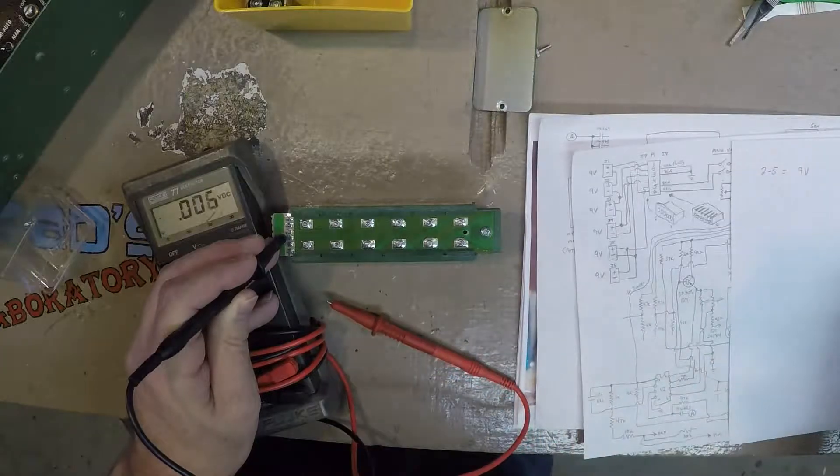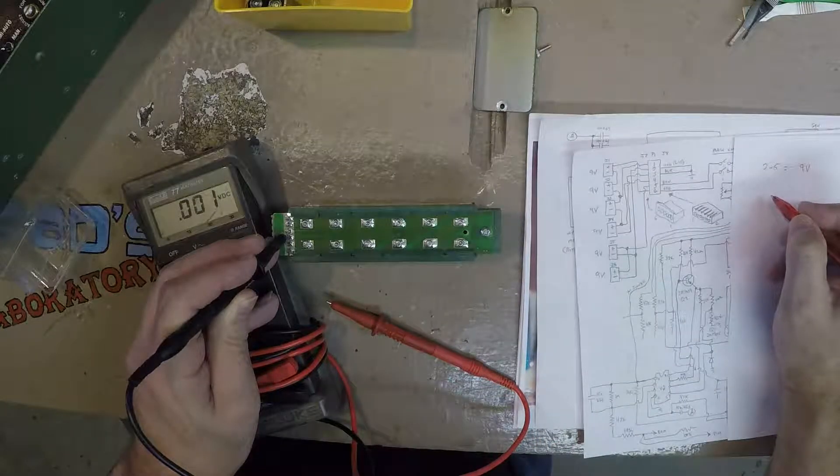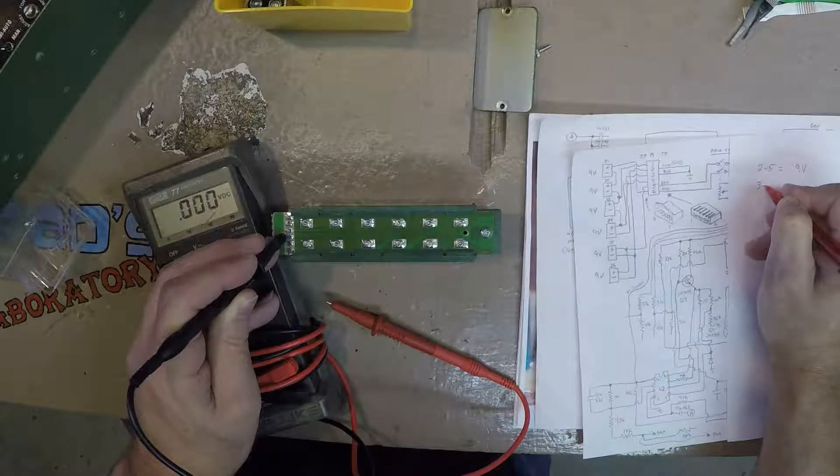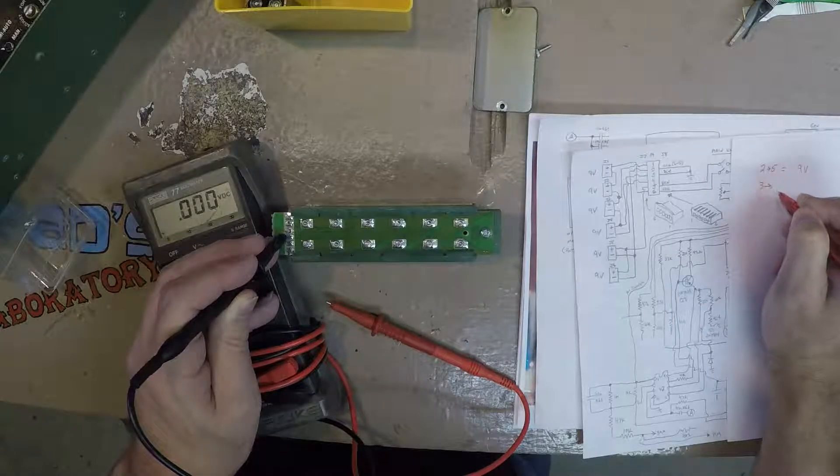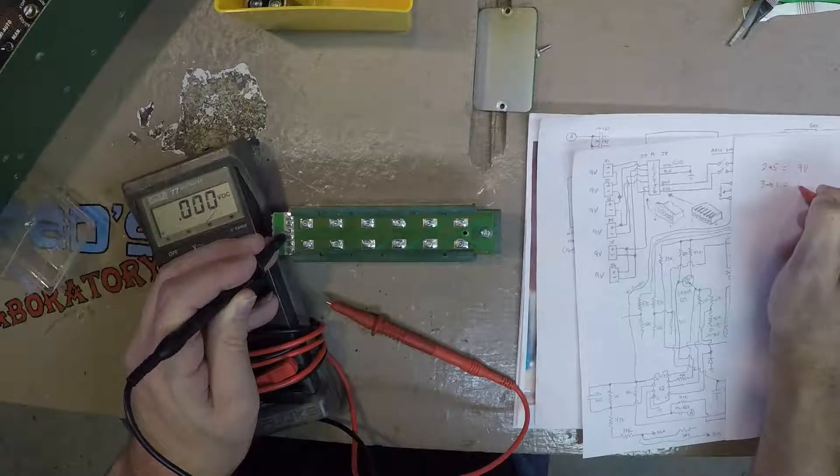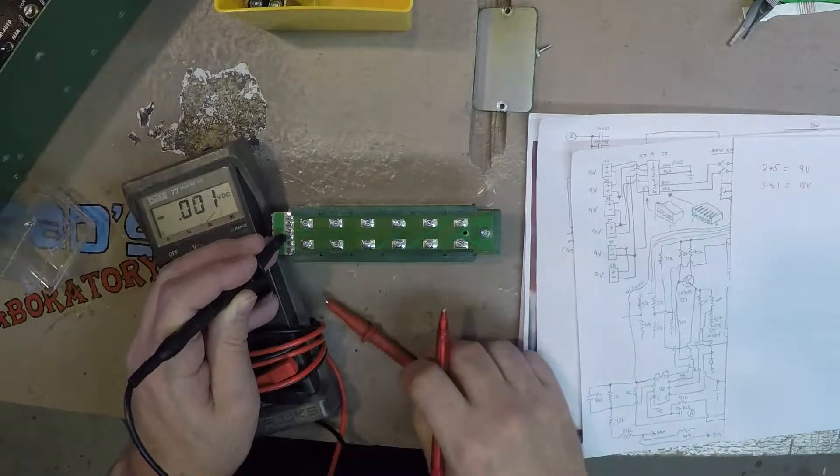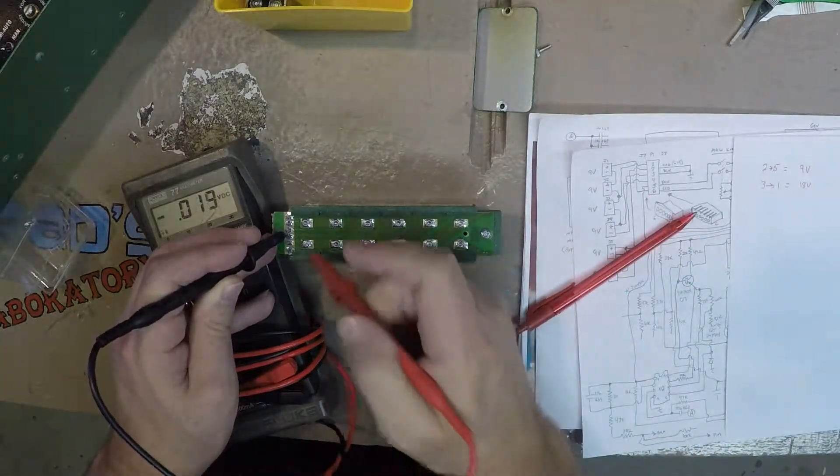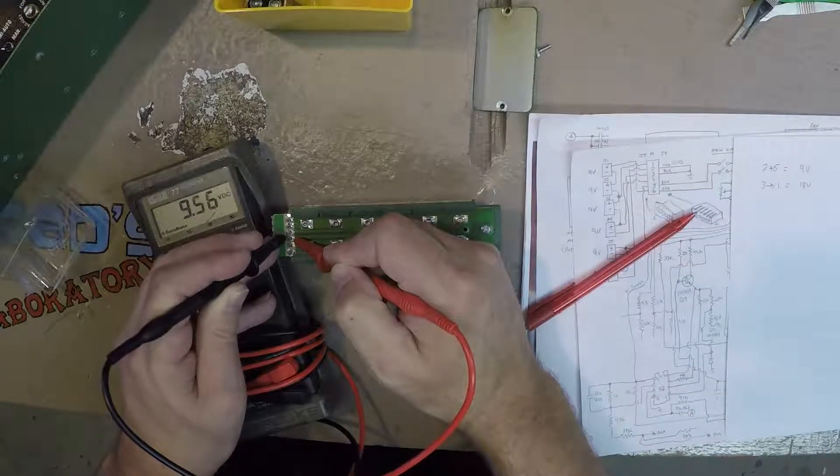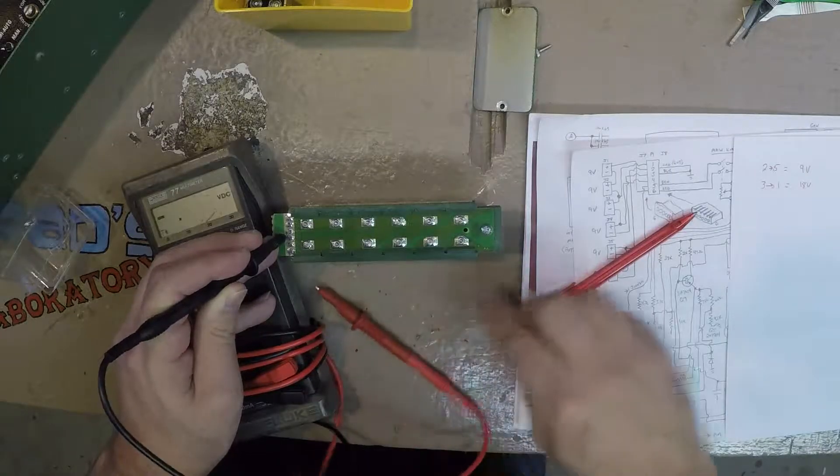5 volts. 3 to 1 equals 18 volts. 3 to 4 equals 9 volts.